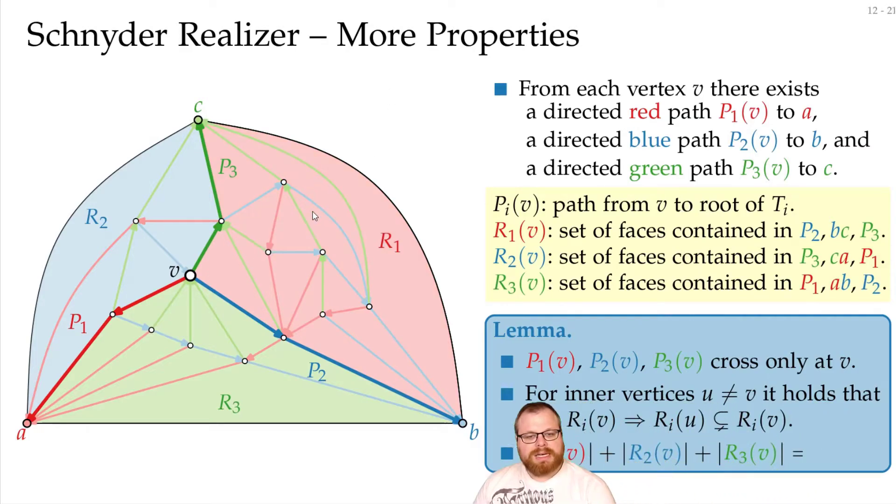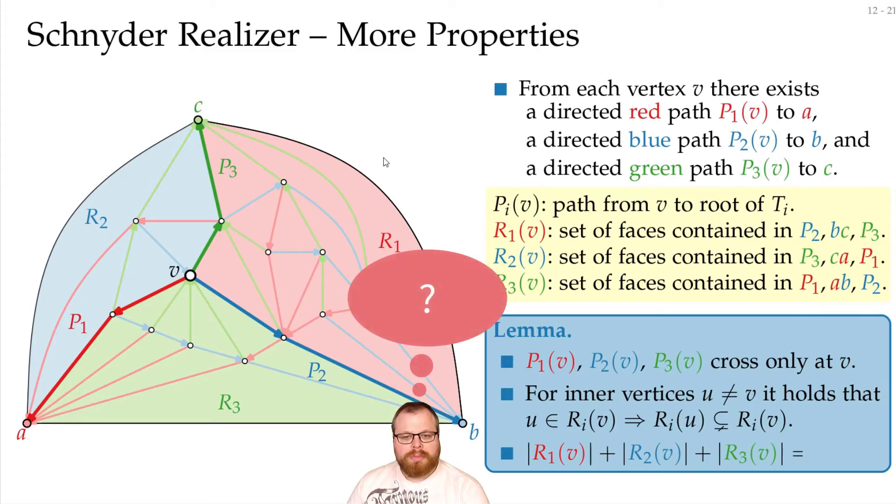Also, if we sum up the size of all these regions, how many faces do we get here? We know that a triangulated planar graph has exactly 2n-4 faces. One of those is the outer face, so we have 2n-5 interior faces left, and every face is in exactly one of those regions. So the sum of these is 2n-5.